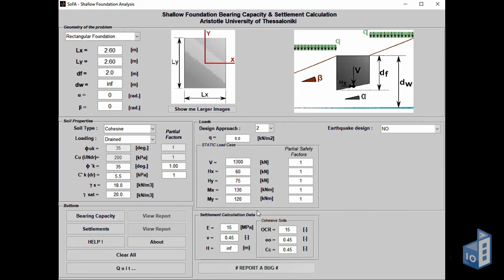Moving to the settlement calculation data section, the first parameters needed are the elastic modulus and Poisson's ratio. These are followed by the stratum thickness and parameters such as the over-consolidation ratio and gap percentage.